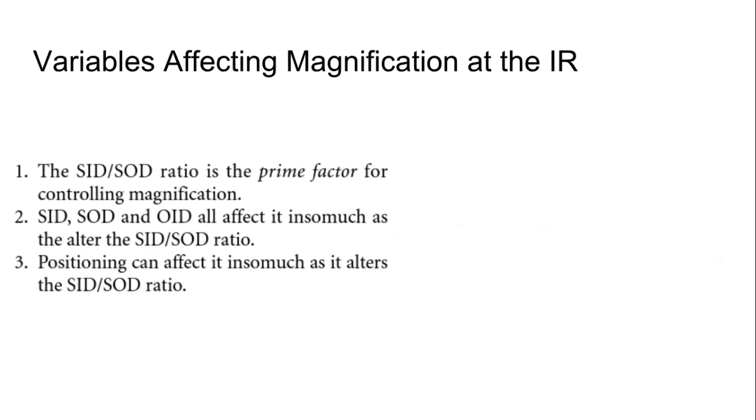So we've probably touched upon these variables affecting magnification. Of course, we said our SID, SOD ratio, if any of those change. In other words, SID being reduced or SOD changing could affect magnification. SID, SOD, and OID as we've discussed as well, and positioning slightly, right? I mean, if you are, I heard stories of the Y view. People told me in class I believe last week people were doing the Y view AP instead of PA, and that's going to create an awful lot of magnification at the image receptor.